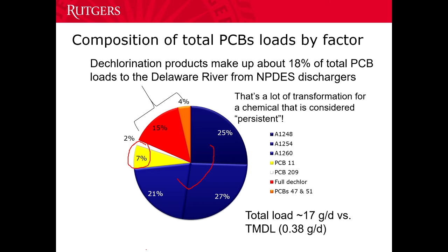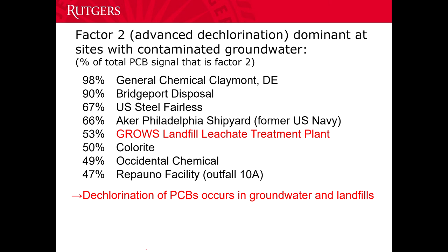Looking sample by sample, the samples with the highest amount of advanced dechlorination signal are all places where there was PCB contamination in the groundwater, and the NPDES permit was to pump up the groundwater, treat it, and discharge it to the river — Philadelphia Shipyard, U.S. Steel Plant, Bridgeport Disposal and General Chemical. These places had lots of spills and very contaminated groundwater. There's also a plant that does nothing but treat landfill leachate — a big amount of dechlorination products in their effluent, which indicates the dechlorination was happening in the landfill.